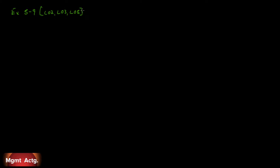Drew Architectural Design uses a job order costing system and applies studio overhead to work in process on the basis of direct staff costs. That's important — so far we've been using machine hours or direct labor hours, but here our applied overhead equals the predetermined overhead rate times actual direct labor dollars, not hours. Read the question carefully so you don't use hours instead of dollars.